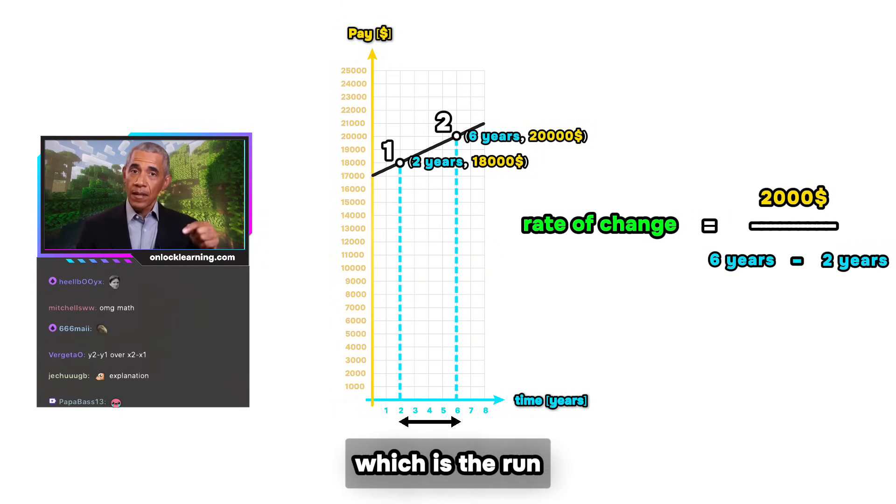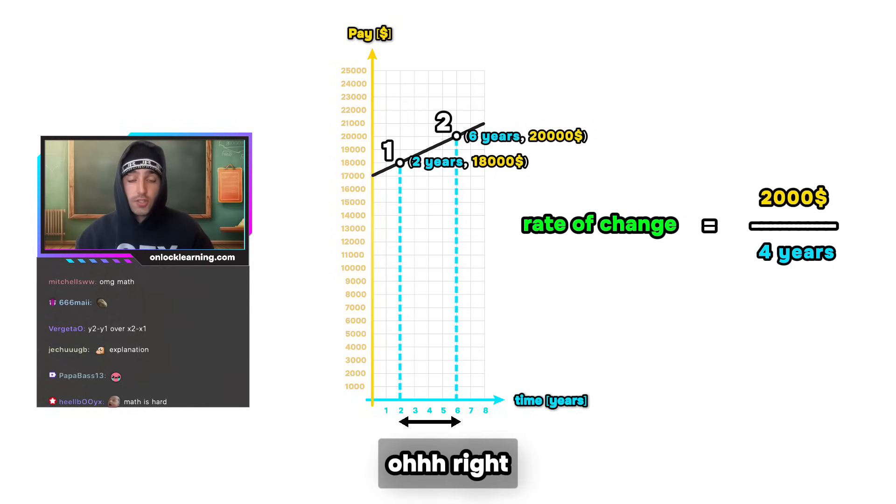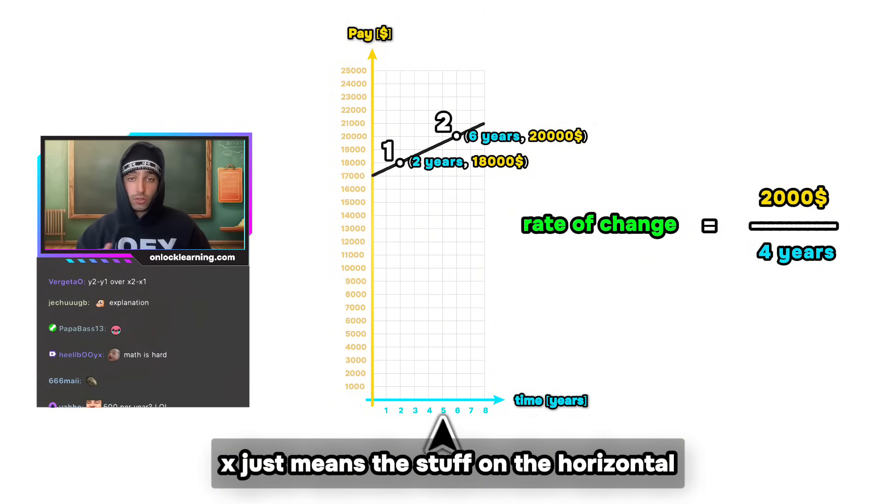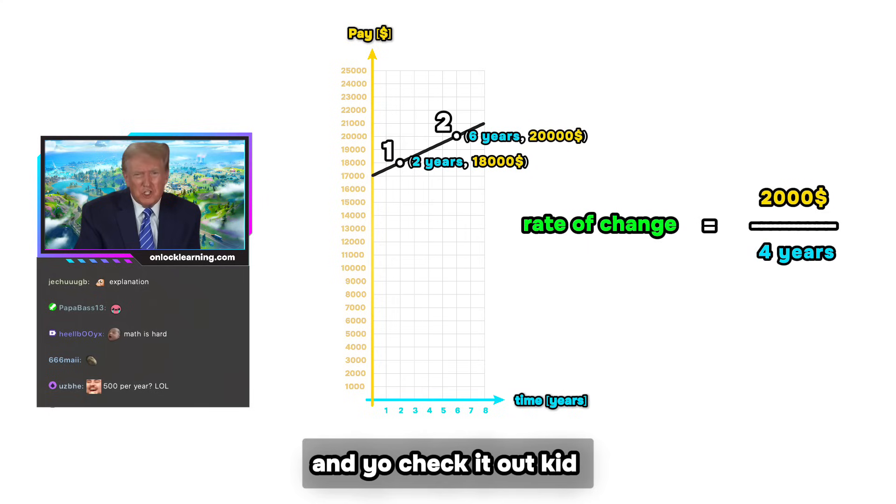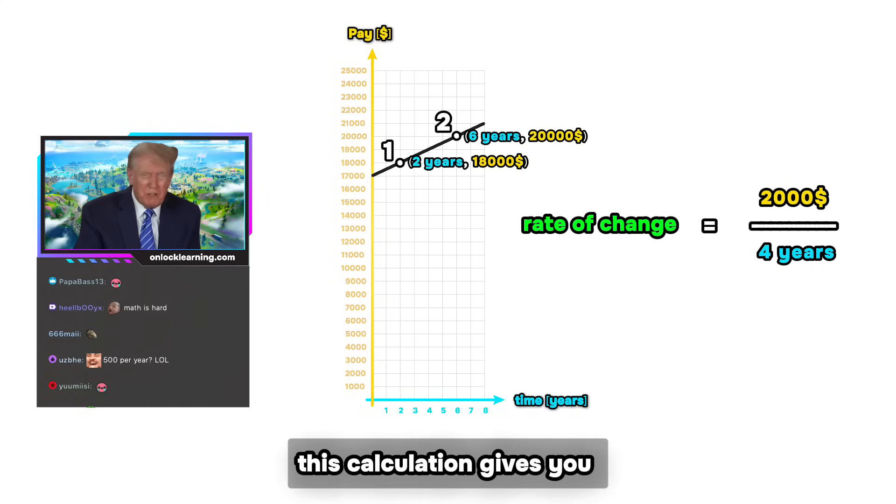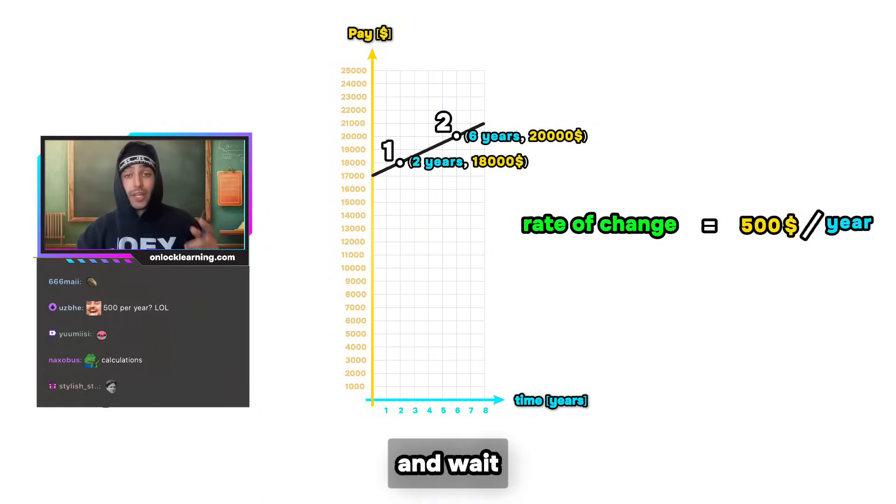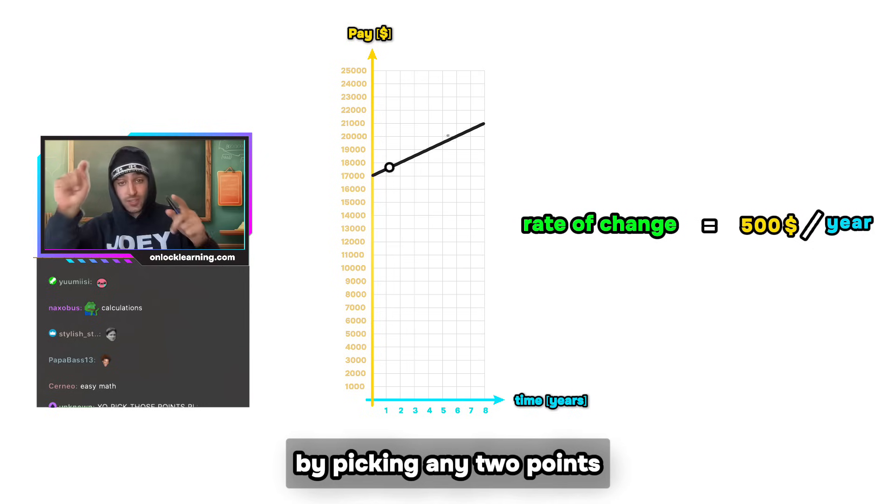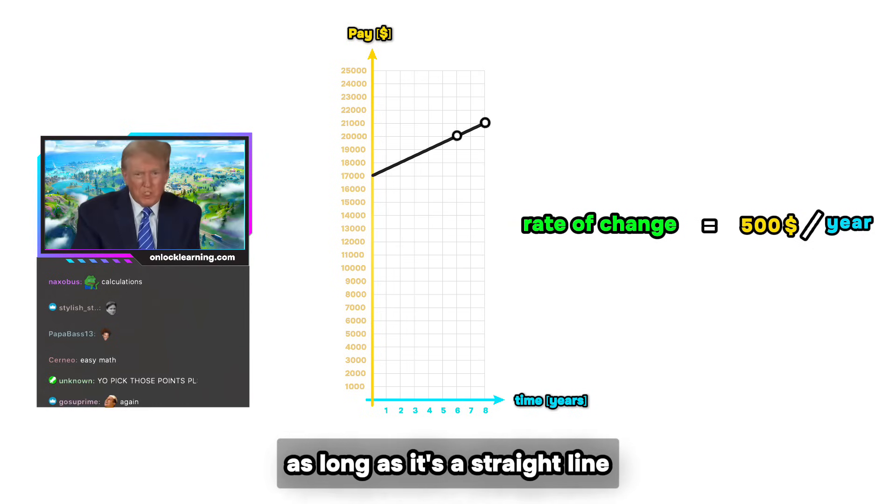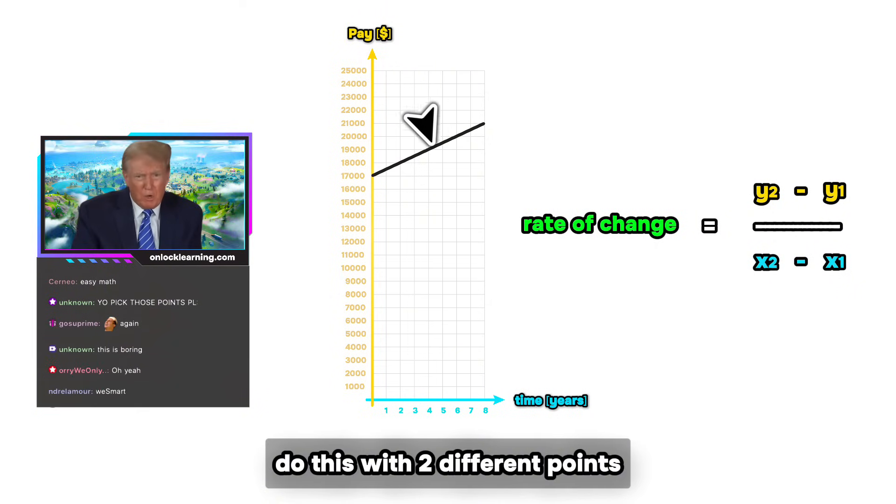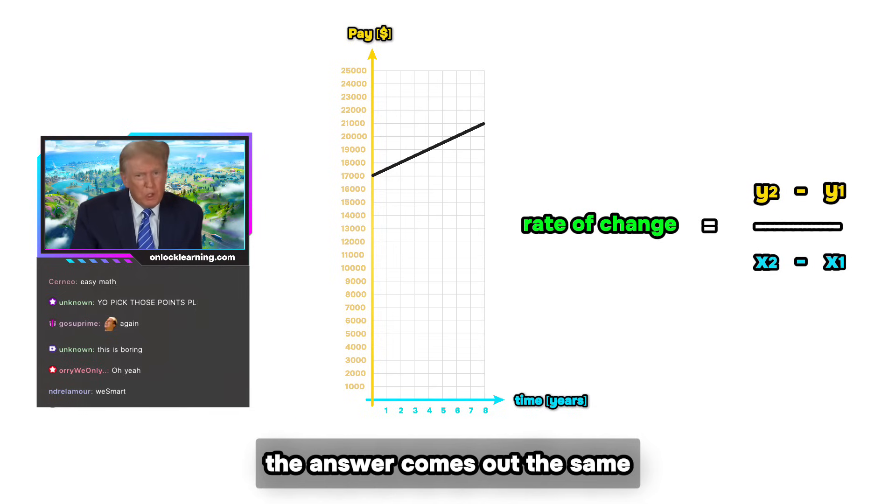Oh right, so y just means the stuff on the vertical axis, x just means the stuff on the horizontal. Essentially, yes. And check it out kid, this calculation gives you 500, just like everyone said before. And wait, you said this works by picking any two points? Yeah, as long as they're both on a straight line. Hey Joe, do this with two different points please and show everyone the answer comes out the same.